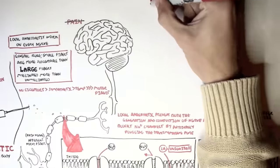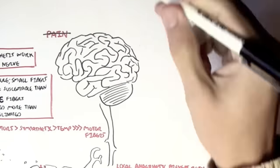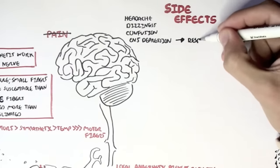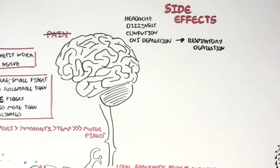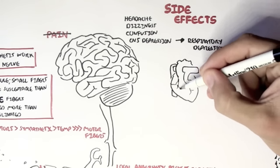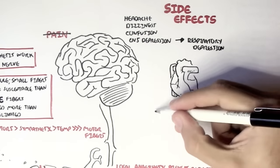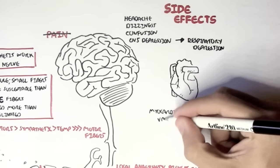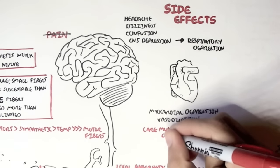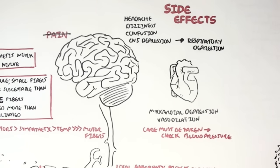The side effects of using local anesthetic include headache, dizziness, confusion, and CNS depression, which may be fatal if it leads to respiratory depression. However, cocaine actually doesn't cause CNS depression, but causes excitement instead. So that's cocaine. Side effects of local anesthetic also affect the heart. It can lead to myocardial depression, vasodilation as well, and so care must be taken. We have to check the blood pressure before giving local anesthetic. Cocaine again, on the other hand, doesn't cause myocardial depression, but increases the activity.